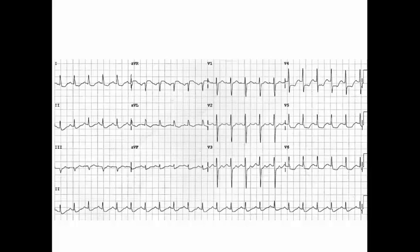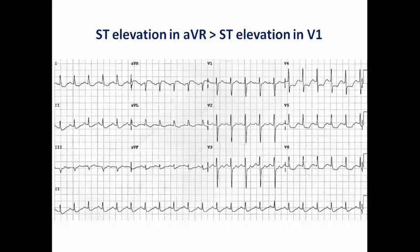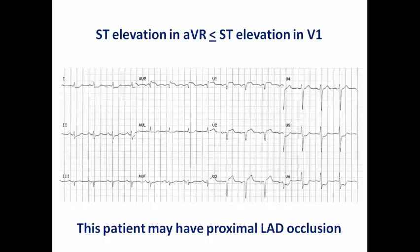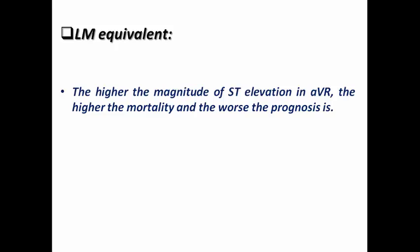Here is another ECG showing left main equivalent pattern. We can see that ST elevation in AVR is much more than ST elevation in V1. Based on the fact that ST elevation in AVR is greater than in V1, this patient most probably has a left main lesion. Whereas in the previous example, ST elevation in AVR was nearly the same or less than in V1, suggesting the culprit vessel may be just proximal or near-ostial LAD occlusion, not the left main itself. So when ST elevation in AVR is greater than in V1, expect the left main to be the affected vessel. When ST elevation in V1 is greater than or equal to AVR, it may be just proximal or near-ostial LAD occlusion.